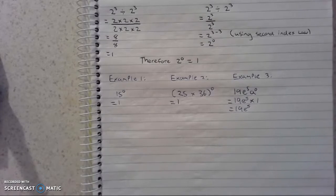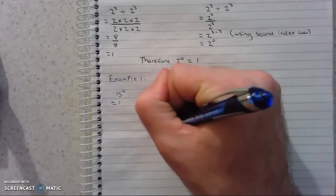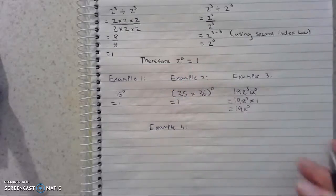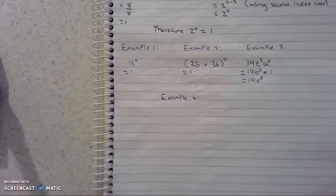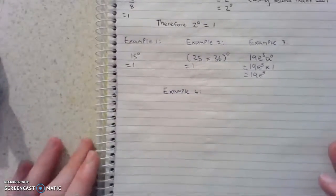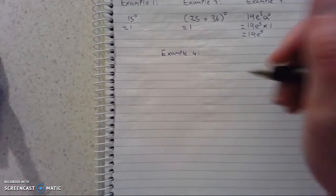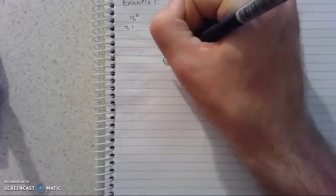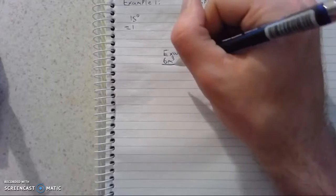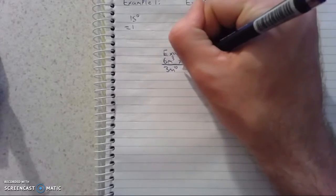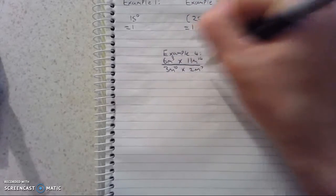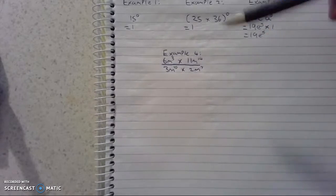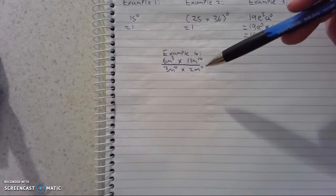The third law is simply explaining that anything to the power of 0 will always equal 1. So we'll do a fourth and final example. We will do 6m to the power of 3 times 11m to the power of 14, all over 3m to the power of 10 times 2m to the power of 7. This equation is going to require all three index laws that we know so far to solve.